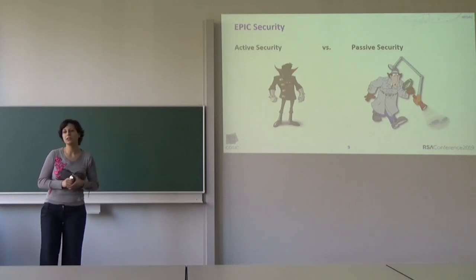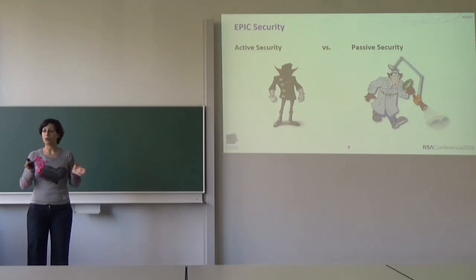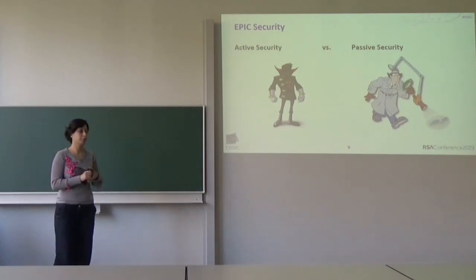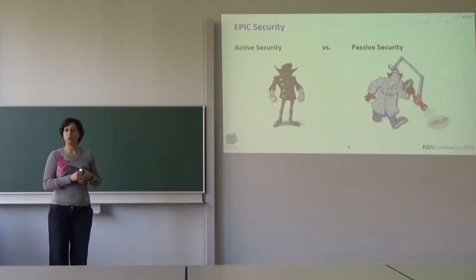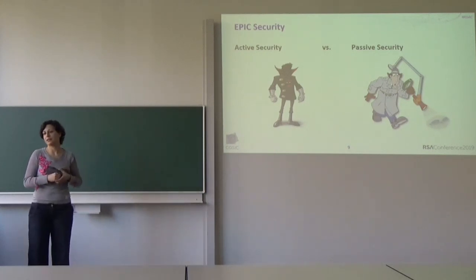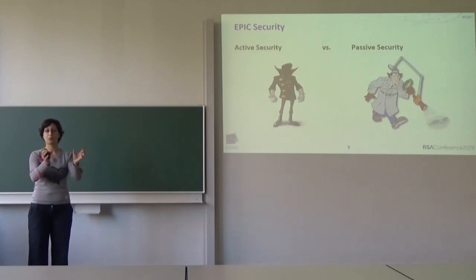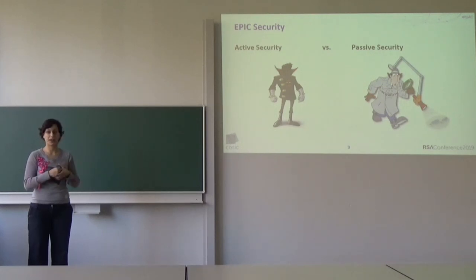Why is active security important? With passive security, you assume that parties are honest but curious — they perform the protocol correctly and only try to learn information about your inputs. But with active security we allow parties to arbitrarily deviate from the protocol, which is a more reasonable assumption. The passive security model has a stronger assumption behind it. At the same time, EPIC works in the dishonest majority setting, so if you trust even only one of the parties taking part in the computation, the protocol guarantees a correct output and privacy.